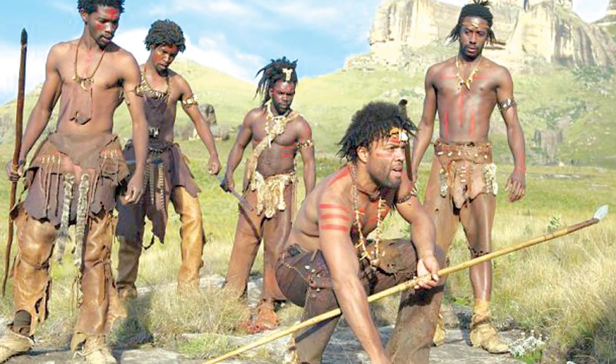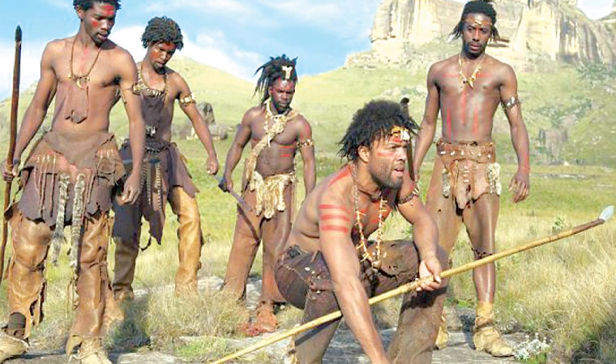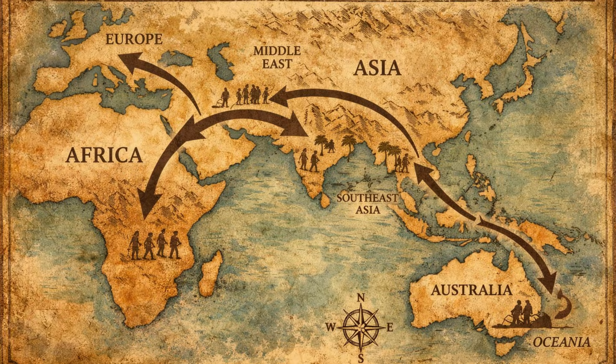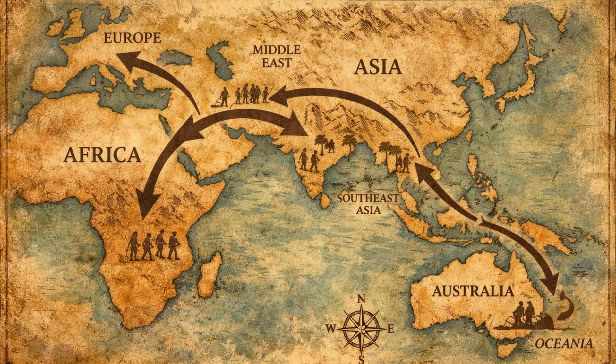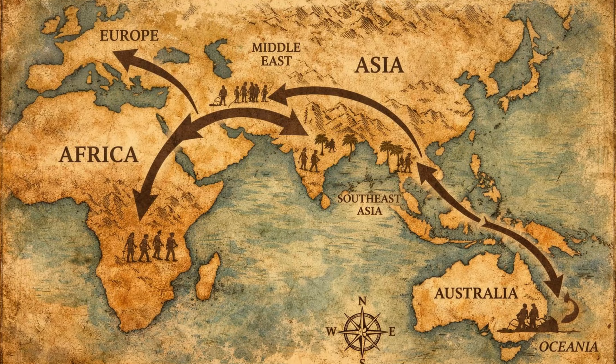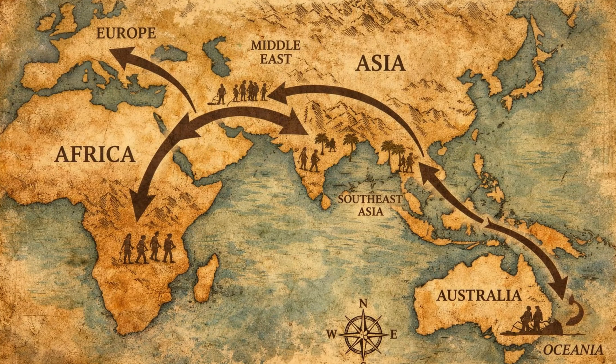These early humans likely left East Africa due to a combination of climate change, population pressure, and improved tools and cognitive abilities. They followed coastal and inland routes through the Middle East, gradually spreading into Asia, Europe, and eventually Oceania.